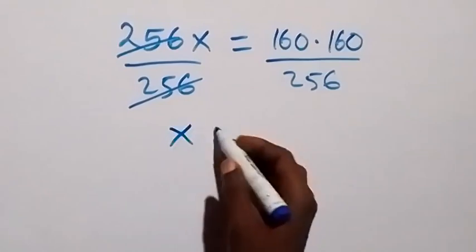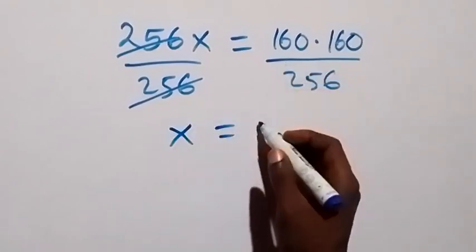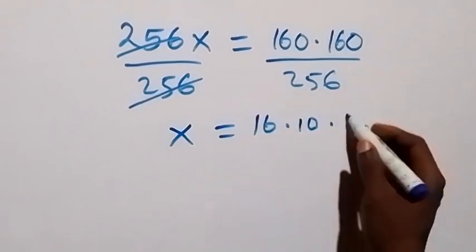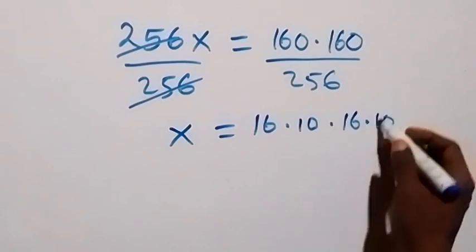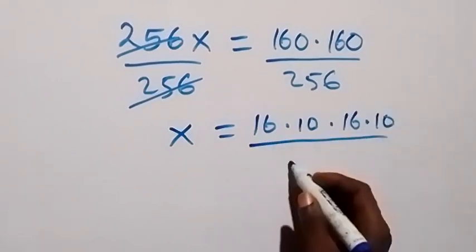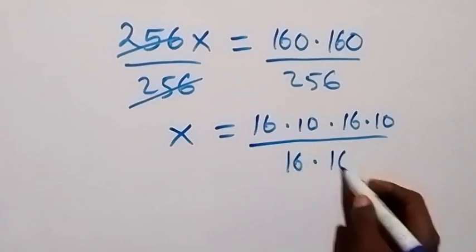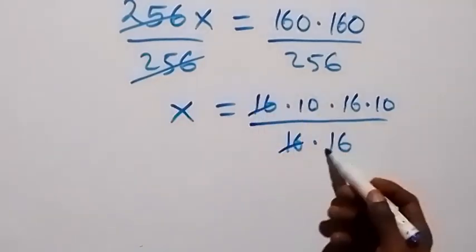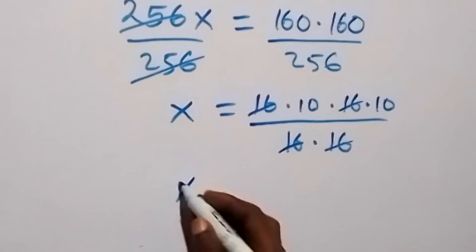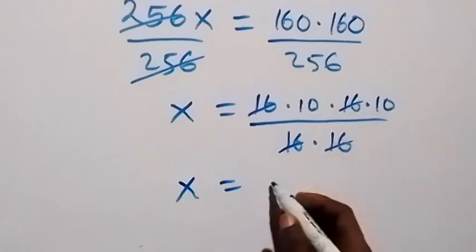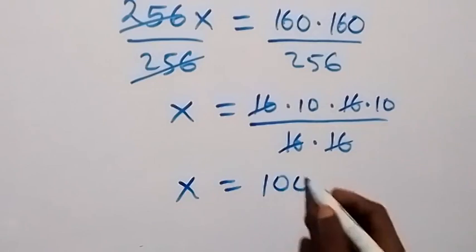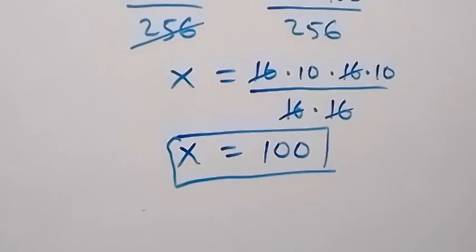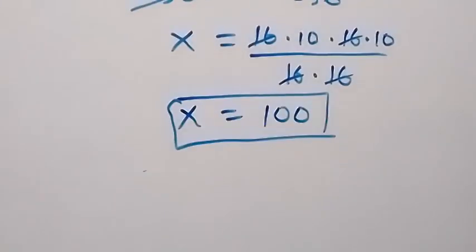The 256 cancels, leaving x. We can write 160 as 16 × 10, so 160² is 16 × 10 × 16 × 10, and 256 is 16 × 16. The 16s cancel, leaving 10 × 10 = 100. So x equals 100.